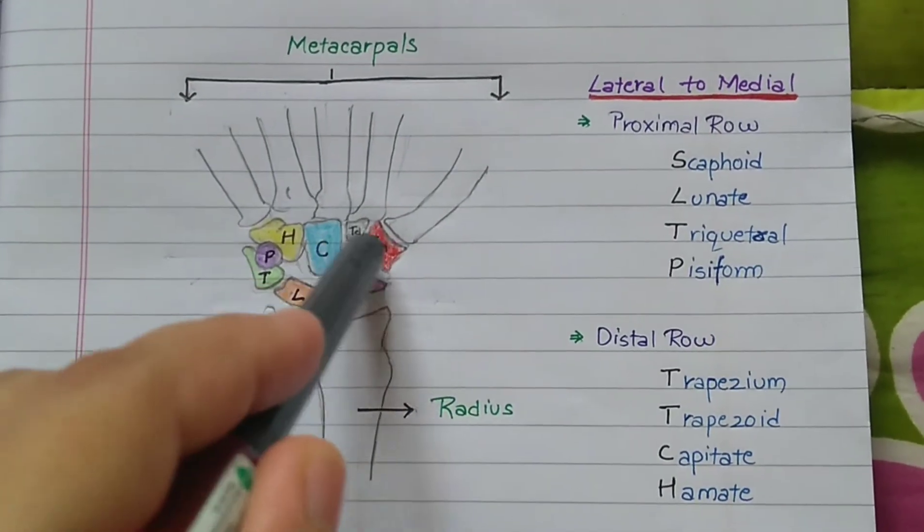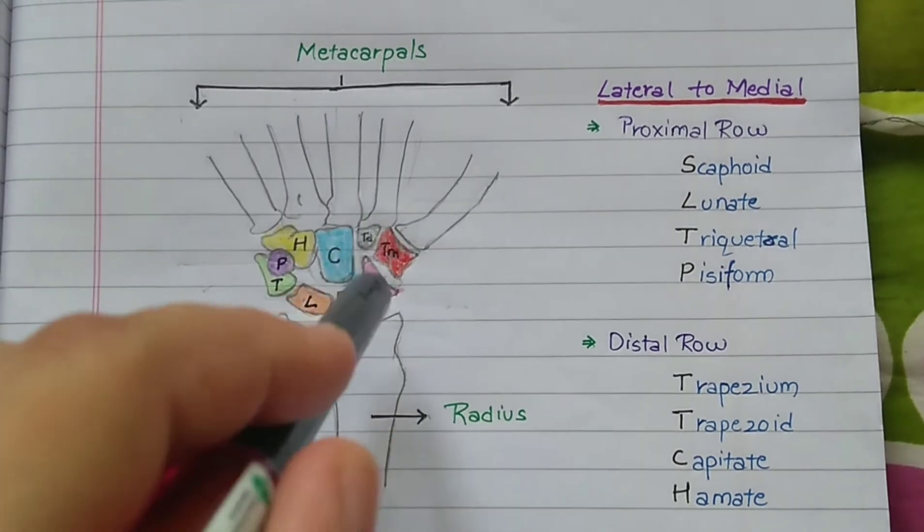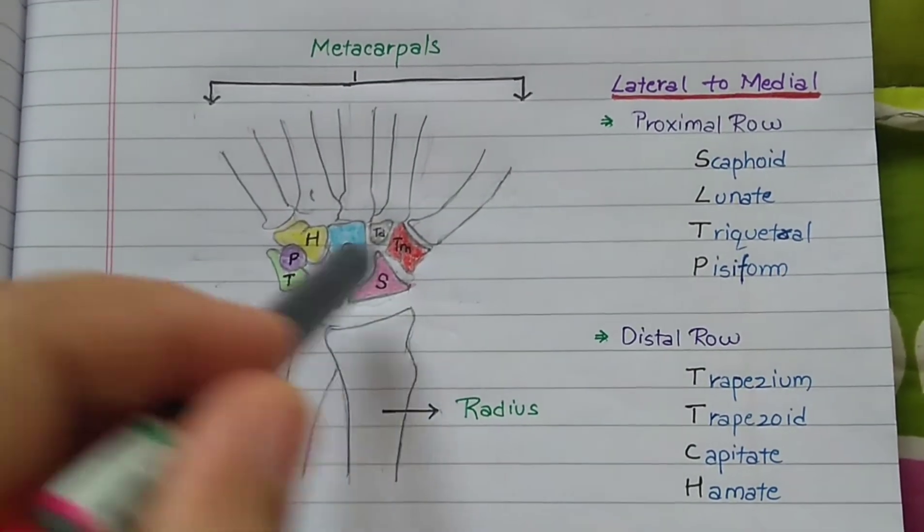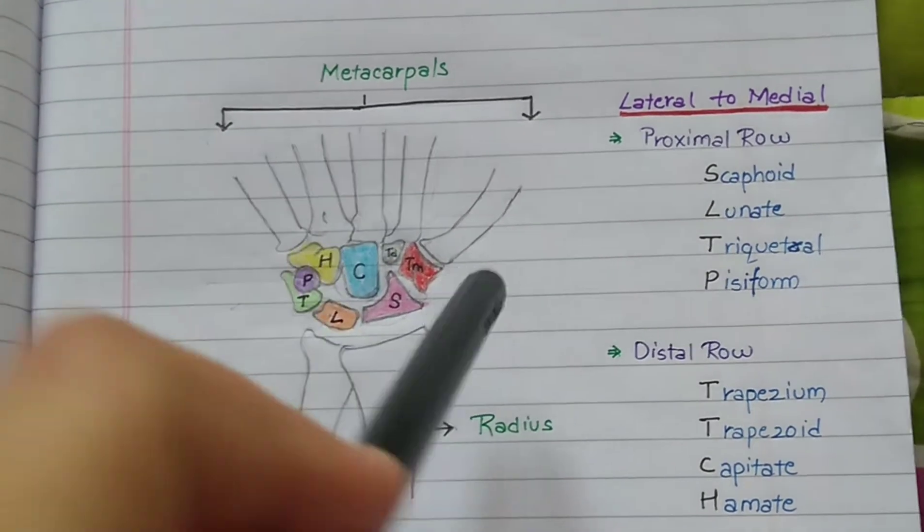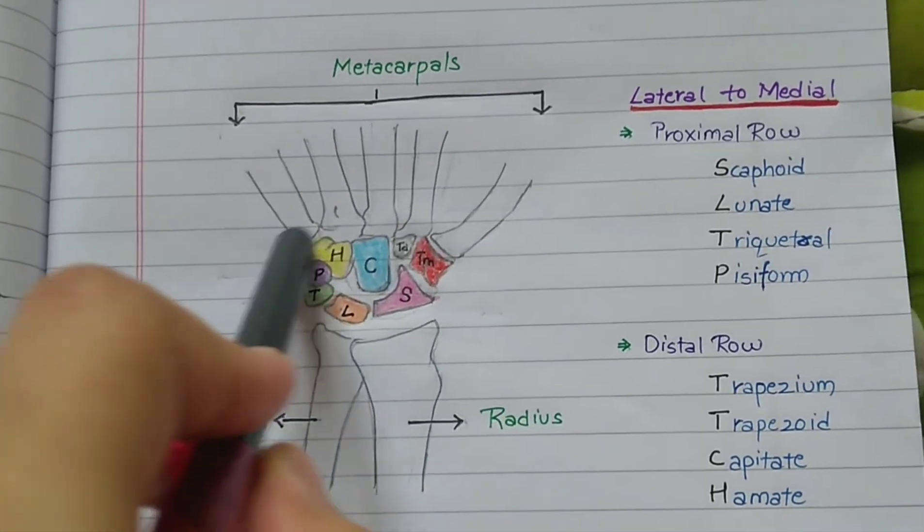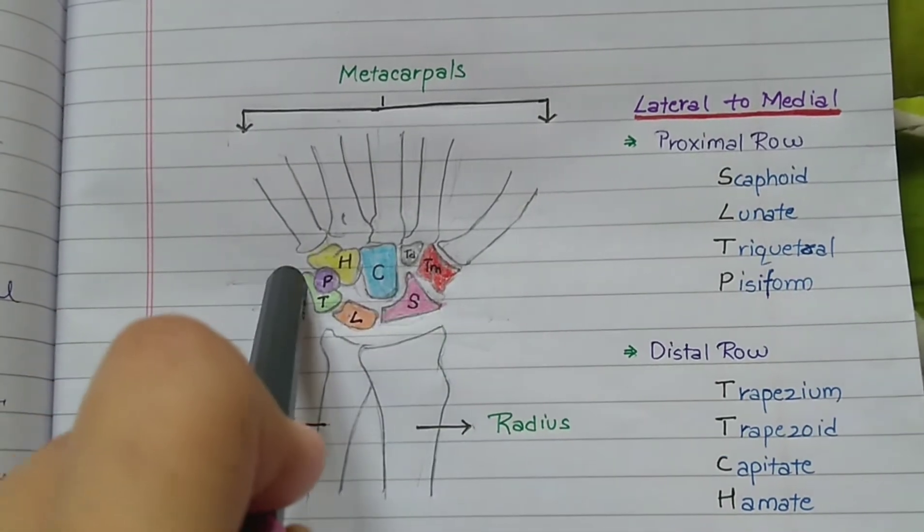The carpal bones are the group of eight irregularly shaped bones. They are organized into two rows, proximal row and distal row. Metacarpals attach to the distal carpal bones.